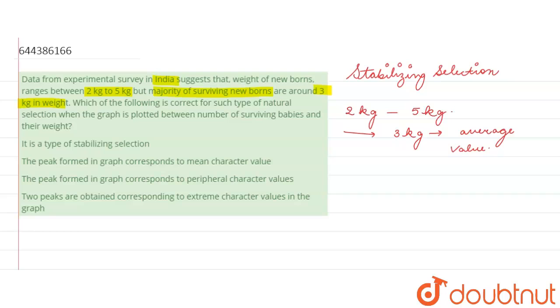So in stabilizing selection, the individuals acquire the mean character value, or the intermediate value.